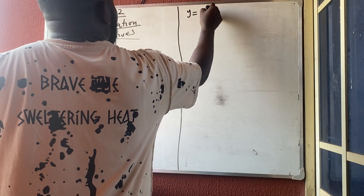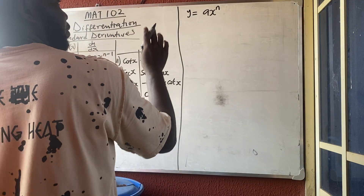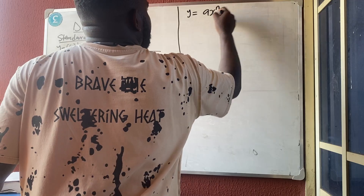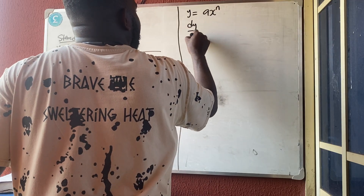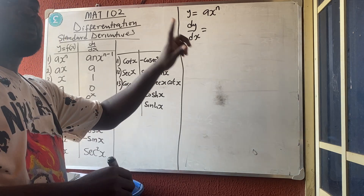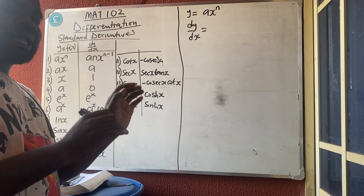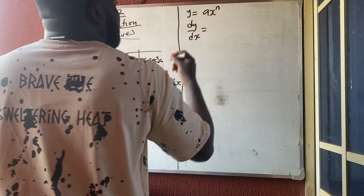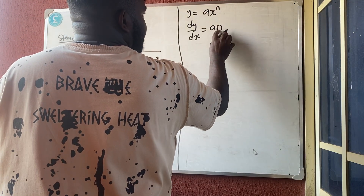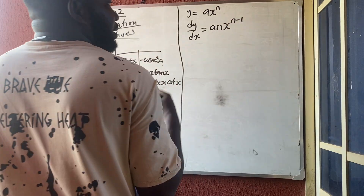The first standard rule says: if y = ax^n, then dy/dx is obtained by multiplying by the power and removing one from the power. So dy/dx = a·n·x^(n−1). That's all — multiply by the power and remove one from the power.